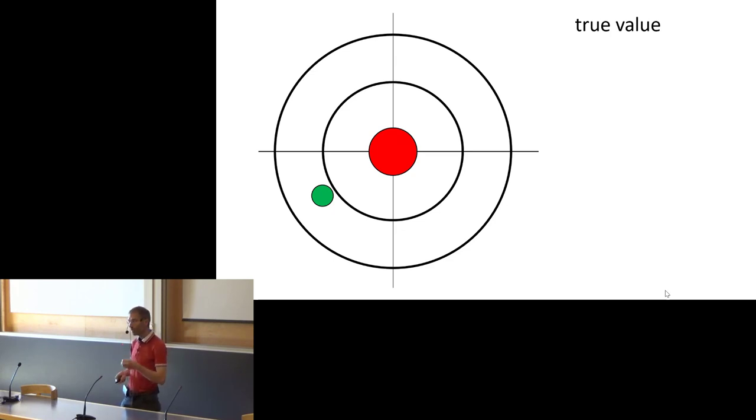The difference between a single measurement and the true value, that's the error. And closely related to the concept error is the concept accuracy. If your error is small, the accuracy is large.